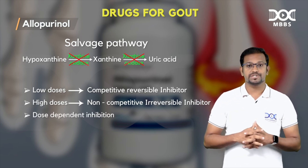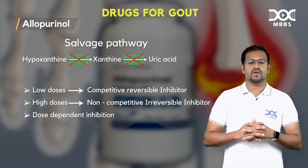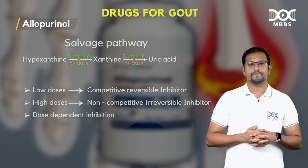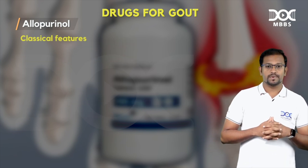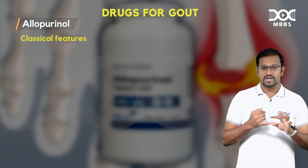This is dose-dependent inhibition — allopurinol tends to produce dose-dependent inhibition of the xanthine oxidase enzyme.